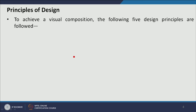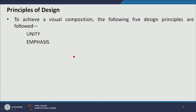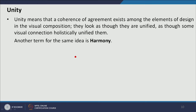To achieve a visual composition there are the following visual design principles: unity, emphasis, proportion, balance, and rhythm. First we will discuss unity.